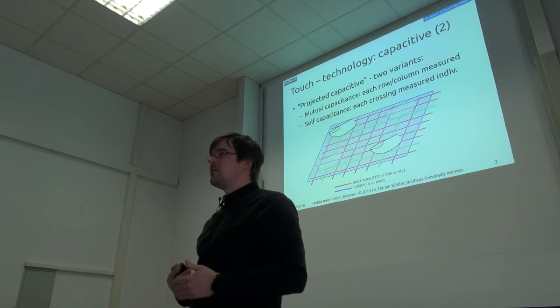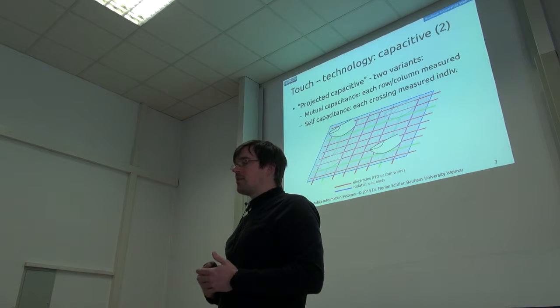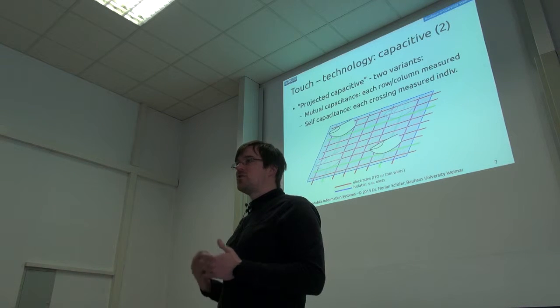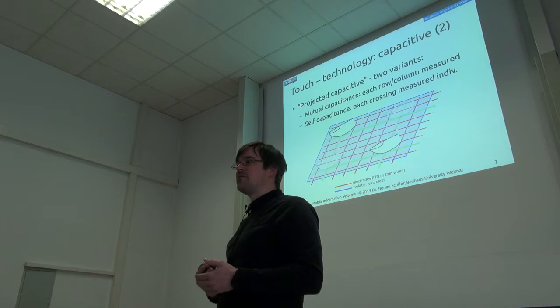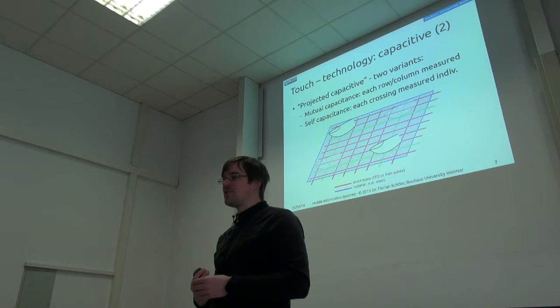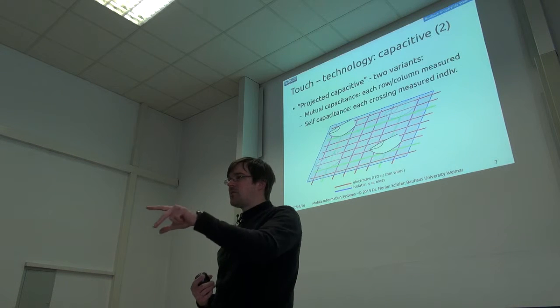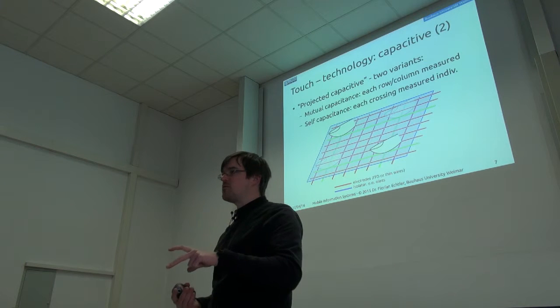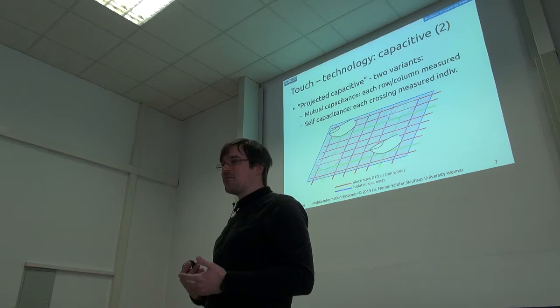It still works more or less for two fingers, but if you have three, then it starts to get really confused. So, if you want really proper multi-touch support for more than two fingers, then you will need the self-capacitance method, which really looks at each crossing point individually. If you have the cheap capacitive touchscreen, even if it says multi-touch, then it might often just support at most two points. And if you have three points, then it starts to get confused.